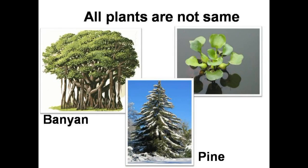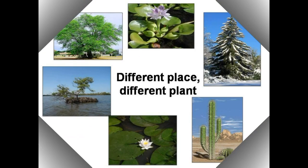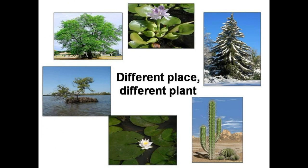All plants don't look the same. You may have seen huge umbrella-like banyan trees. In cold hilly regions, you'd find cone-like pine trees. And you must have seen small water plants floating in ponds. Why are they different?